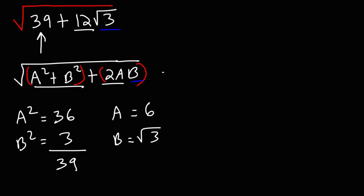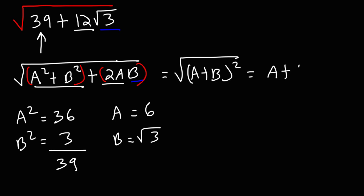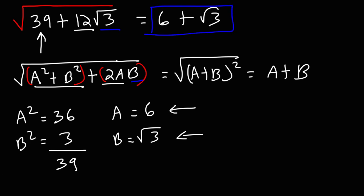So this is going to simplify to the square root of (a + b) squared, which will give us the final answer: a plus b. So a is 6 and b is the square root of 3. Our final answer should be 6 plus the square root of 3.